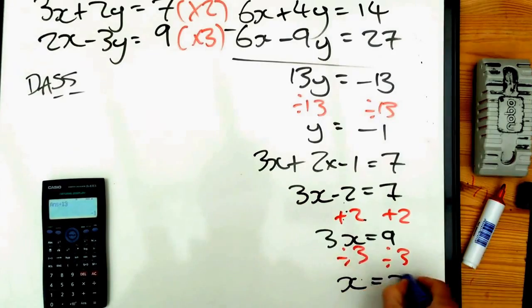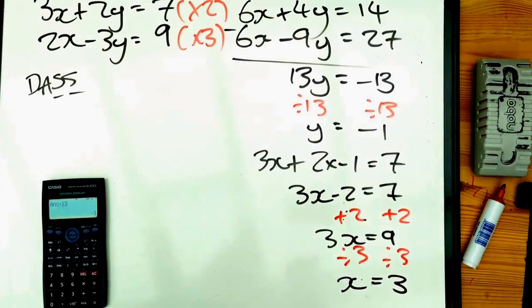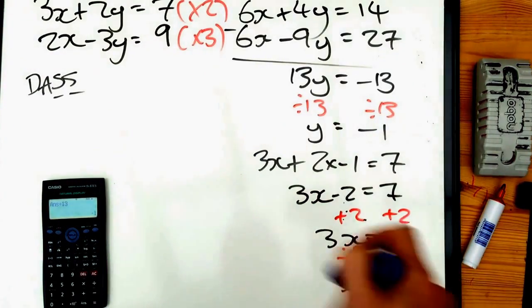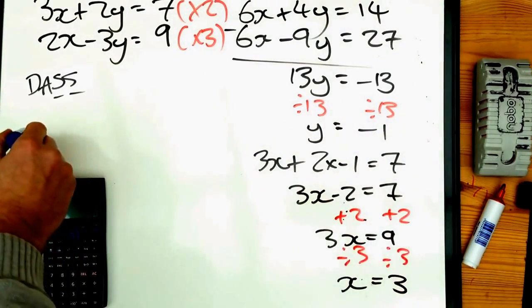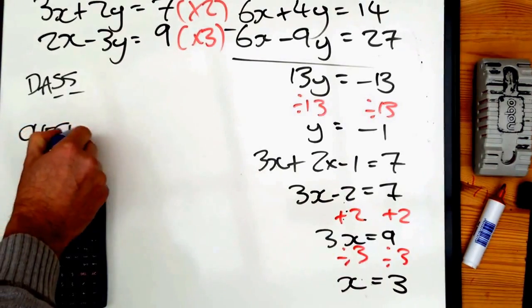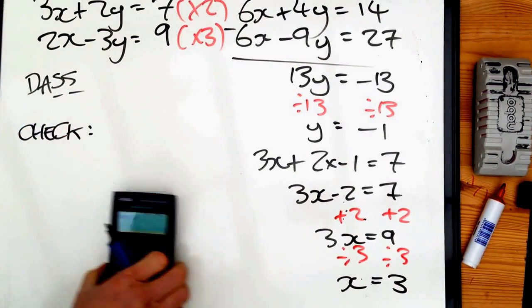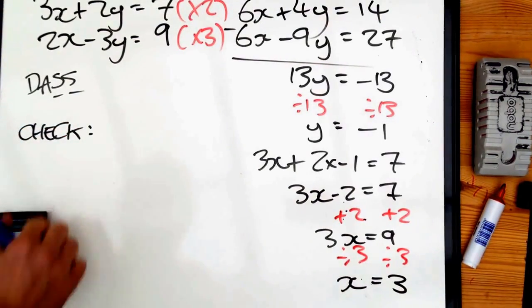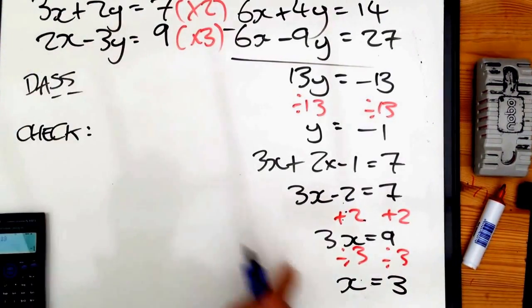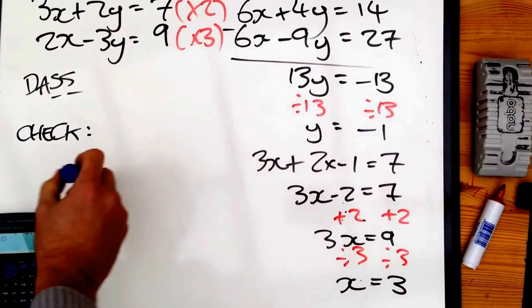So there is my solution: x is three, y is minus one. But I can check this, and it's a good idea to do so just to make sure you've got the answer right. Use the other equation — this one here — and swap in my x and y values.